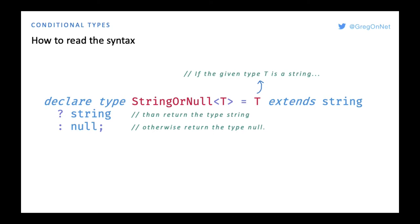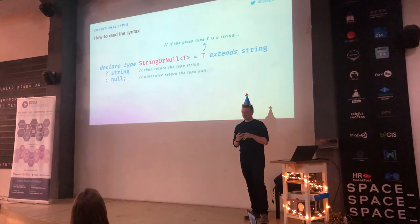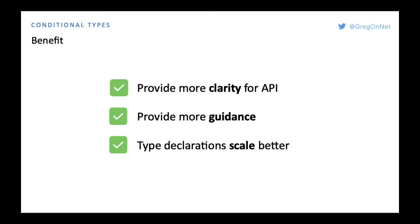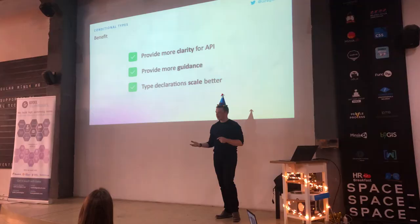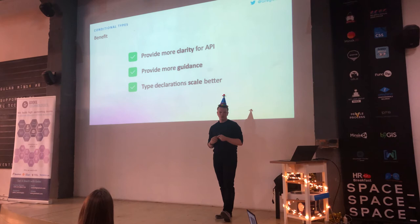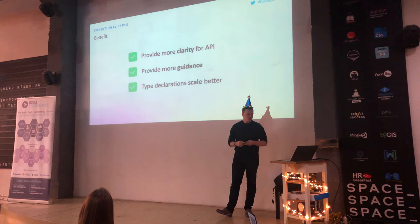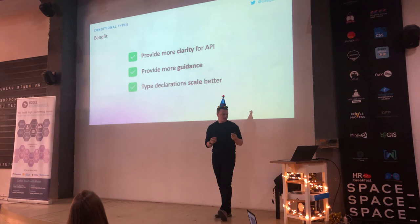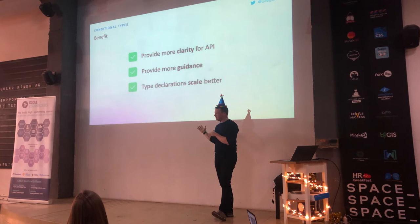When I started using conditional types, it was a little hard to read. The syntax is: if T is of a certain type A, return A; otherwise return another type. The benefit is that you can provide more clarity when it comes to your API. A conditional type is not a feature that adds benefit to your application users — it adds benefit to your team, because you can express what parameters are allowed and what the result of the API is.